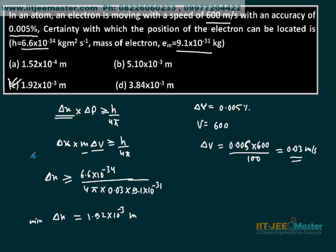The answer is C. It's a simple, very simple problem. But you should know how to calculate this. You cannot just put 0.005 percent directly in place of delta v. You have to substitute the correct value in the formula.